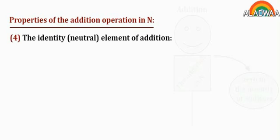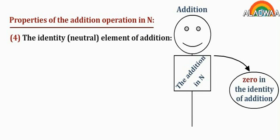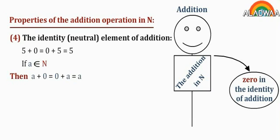Property 4: the identity element of addition. For example, 5 plus 0 equals 0 plus 5 equals 5. If a belongs to the set N, then a plus 0 equals 0 plus a equals a. Therefore, 0 is the identity element of addition.